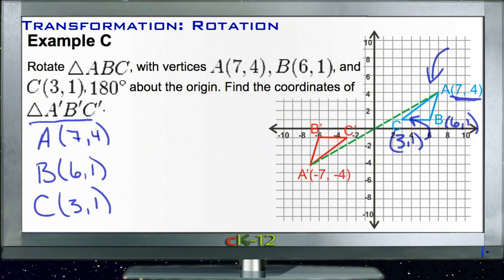So we'll go back and take a look at our new points. We have 7, 4, so that means that A prime will be negative 7, negative 4. And B prime will be negative 6, negative 1.